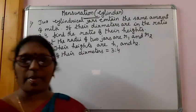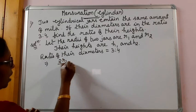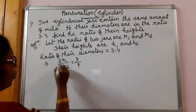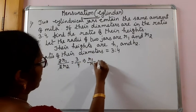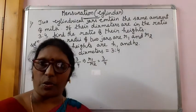We know that diameter means 2 into radius. That means, 2 R1 by 2 R2 is equal to 3 by 4. 2, 2 cancel. So, R1 by R2 is equal to 3 by 4.